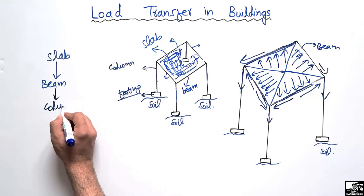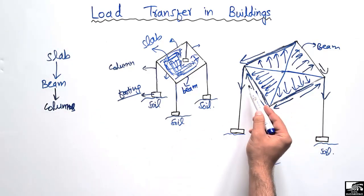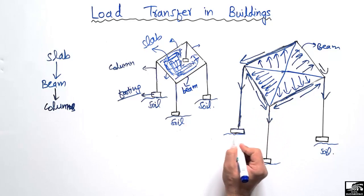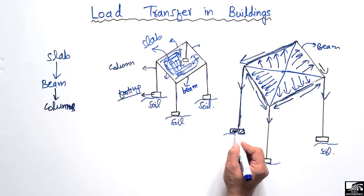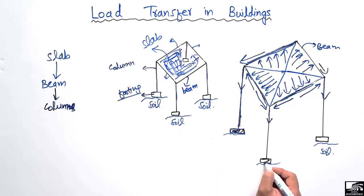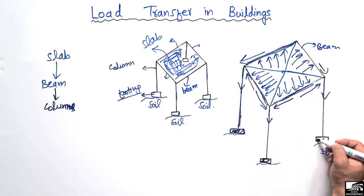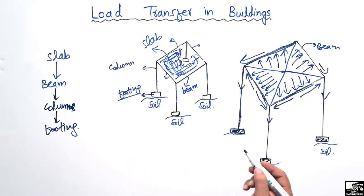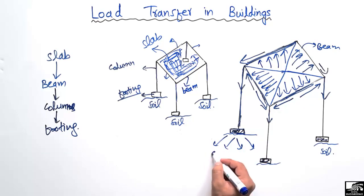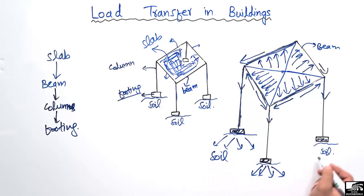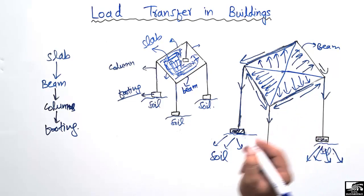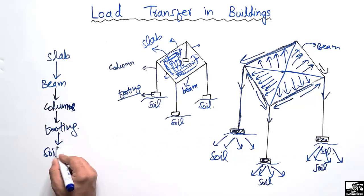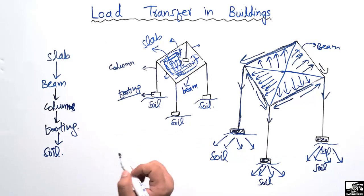After the load is collected in the columns, the columns transfer this load into the footing. Depending on the type and design of the footing and the load acting on it, we provide the appropriate footing type. Then the load is transferred from the footing to the soil in a distributed way. We must ensure that the soil bearing capacity is higher than the load coming onto the soil.